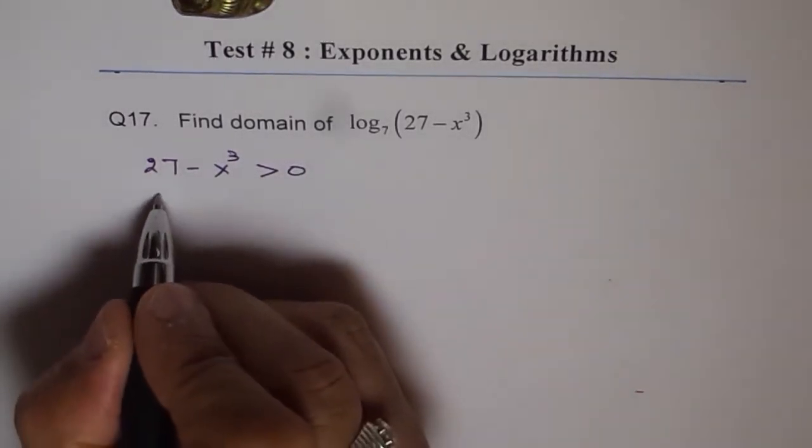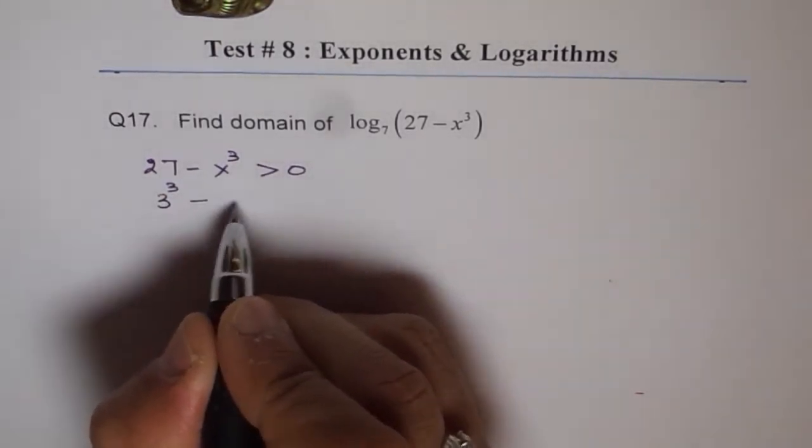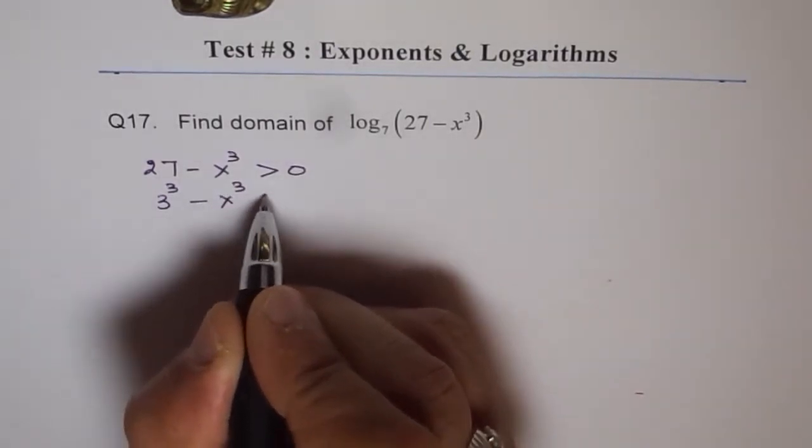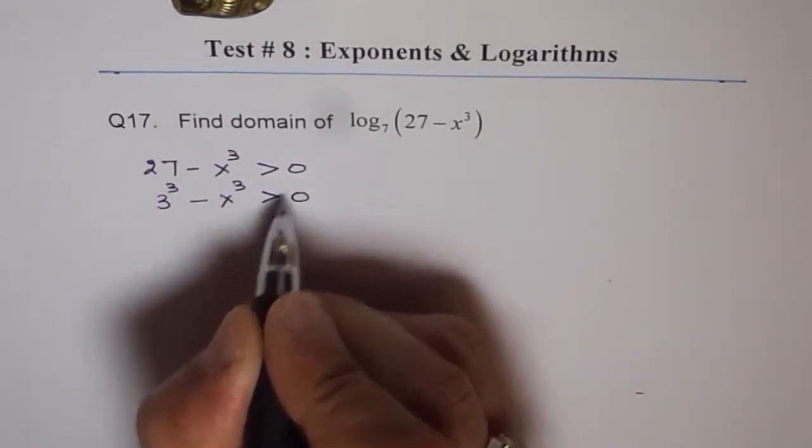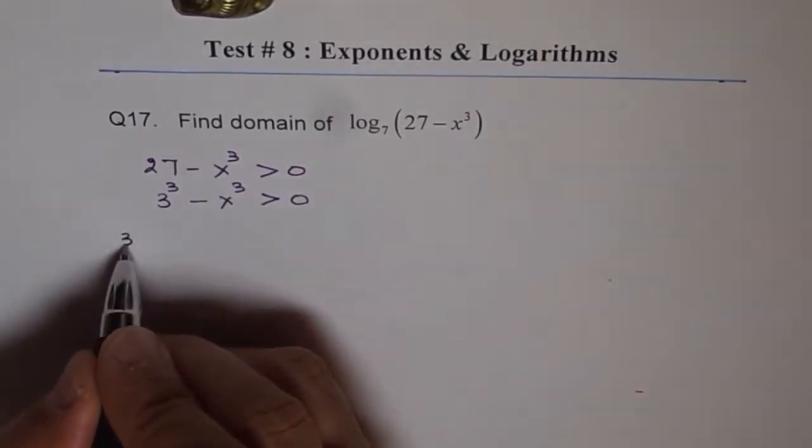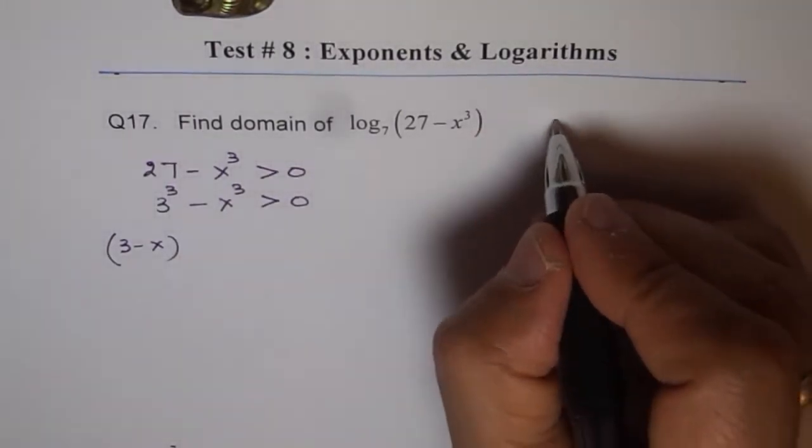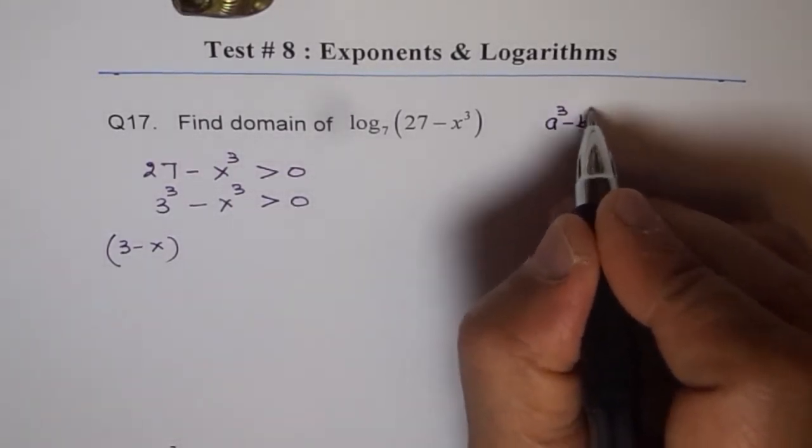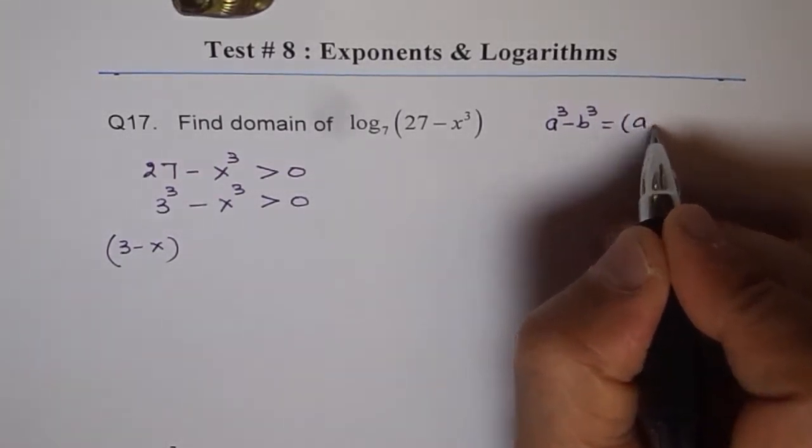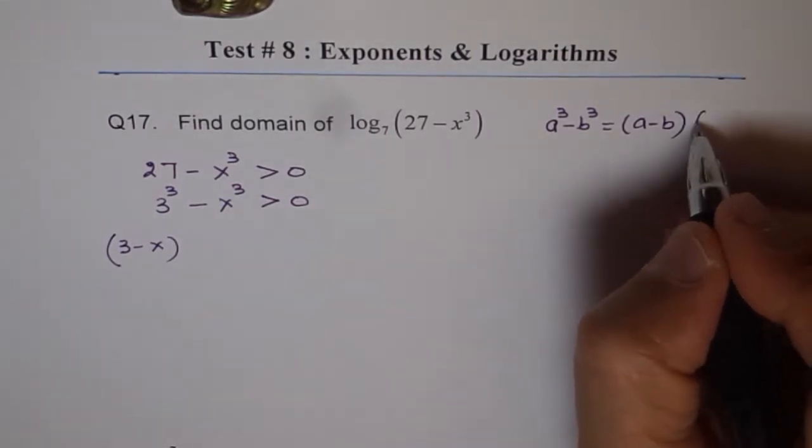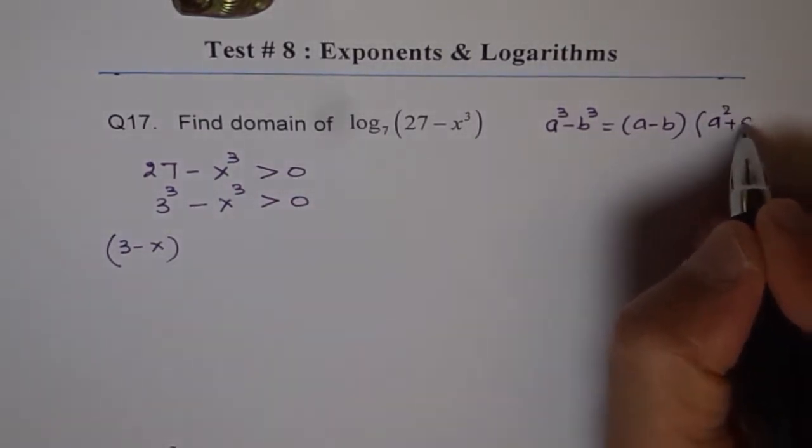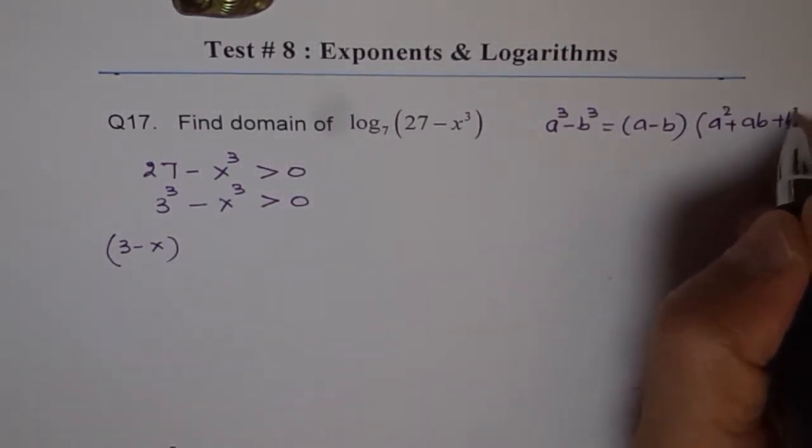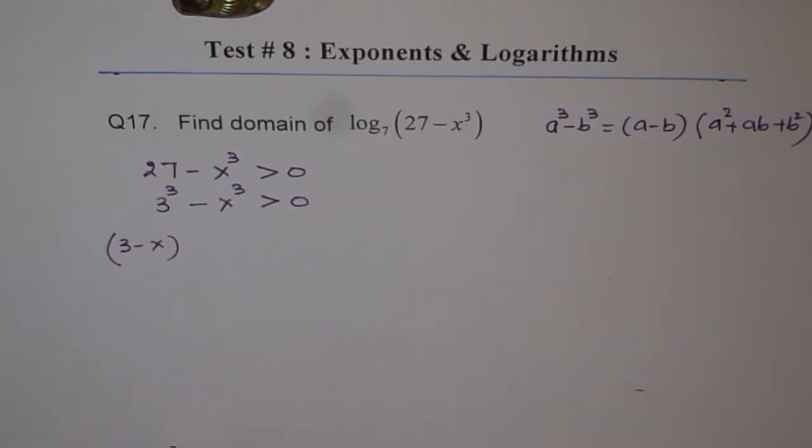Now, this is like 3 cubed minus x cubed should be greater than 0. So we can factor this as 3 minus x. You remember the formula. Let me write it down for you. a cubed minus b cubed is a minus b times a squared plus ab plus b squared. That is the formula which we are going to use.